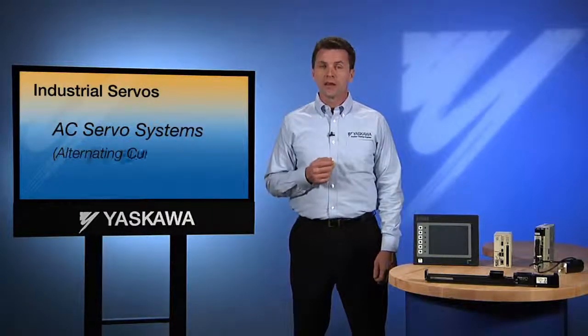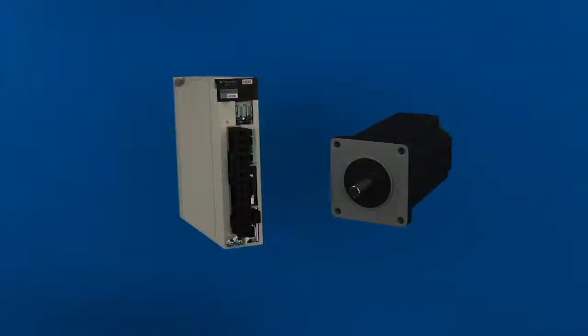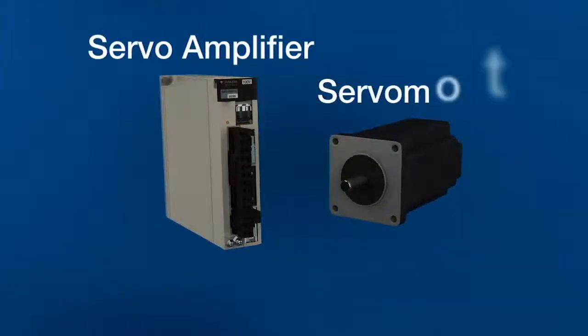AC, of course, refers to the alternating current waveform in the motor during operation. The AC servo system involves two basic components: the servo amplifier and the servo motor.